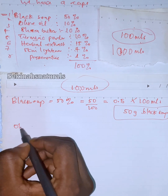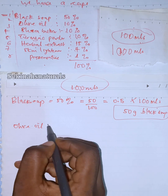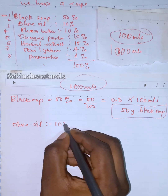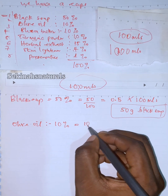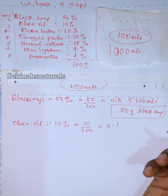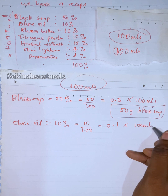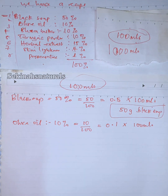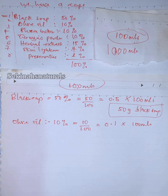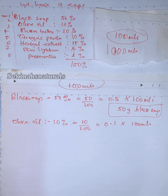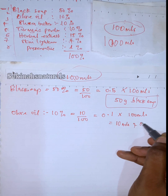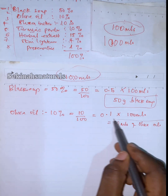Now the next thing we want to calculate is our olive oil. The recipe calls for 10% olive oil. That means we have 10 over 100, which gives us 0.1, times 100 mils — because now we are calculating for 100 mils of black soap, not 500 this time — which gives us 10 mils of olive oil.